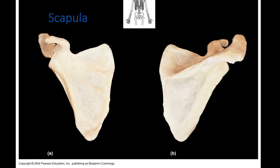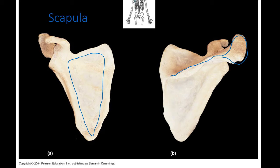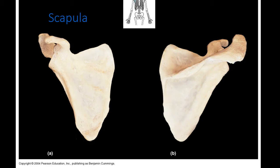The scapula has an anterior, medial, lateral, and posterior side to it. In the anterior view on the left, we have a subscapular fossa, which contains the entire space on the anterior side. On the posterior part of the scapula, there is a spine running down the center, which opens up into the acromion or acromial process. That spine serves as a boundary for the supraspinous fossa above and the infraspinous fossa below.